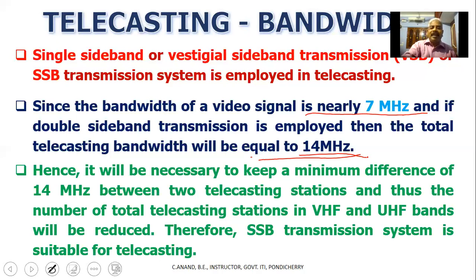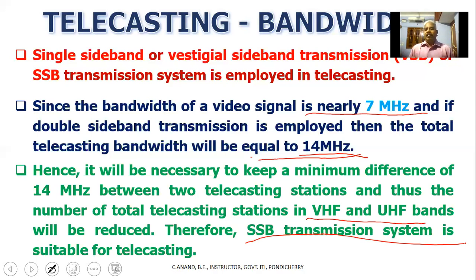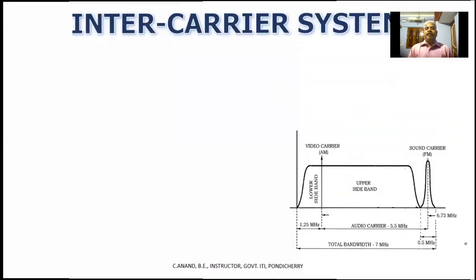If we use a double sideband system requiring 14 MHz, the total number of telecasting stations in VHF (very high frequency) and UHF (ultra high frequency) bands would be reduced. Therefore, the SSB transmission system is suitable for telecasting, giving us 7 MHz bandwidth.